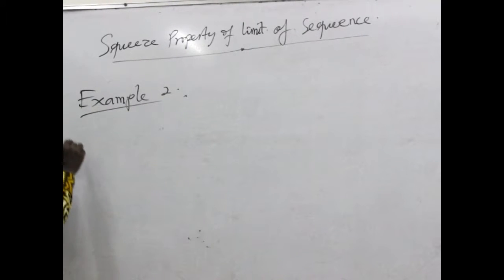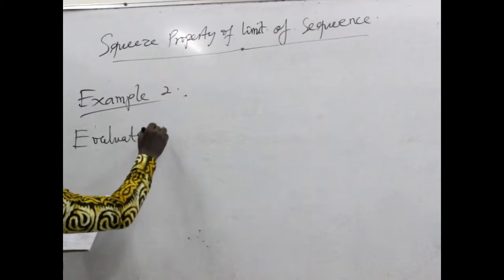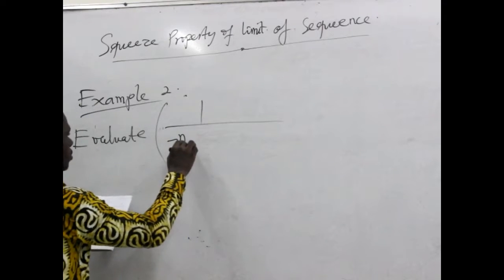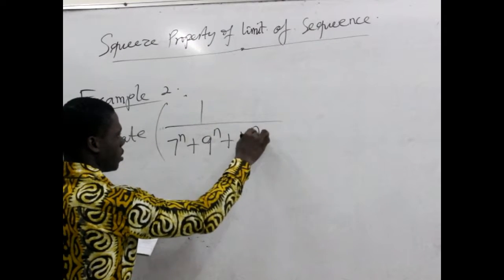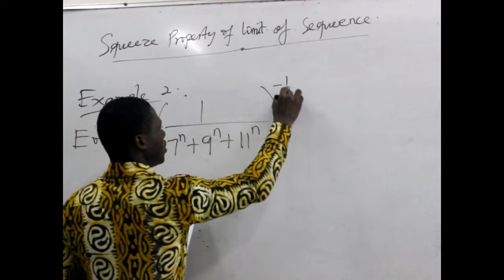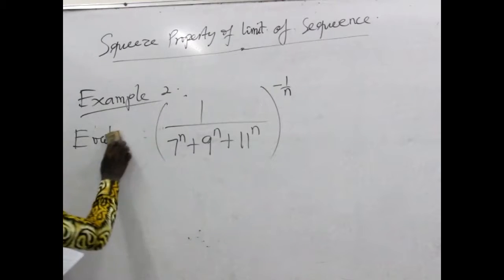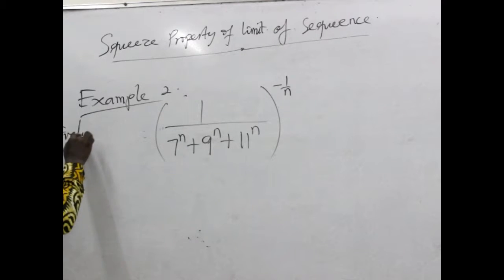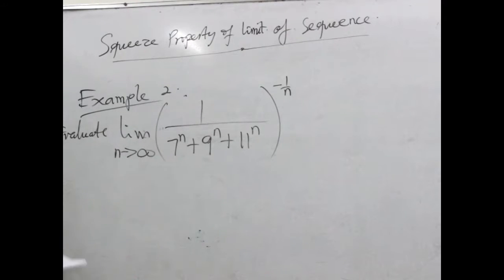We have the expression: 7 over n, 9 over n, and 11 over n raised to the power of negative 1 over n. We are evaluating the limit of this expression as n approaches infinity.